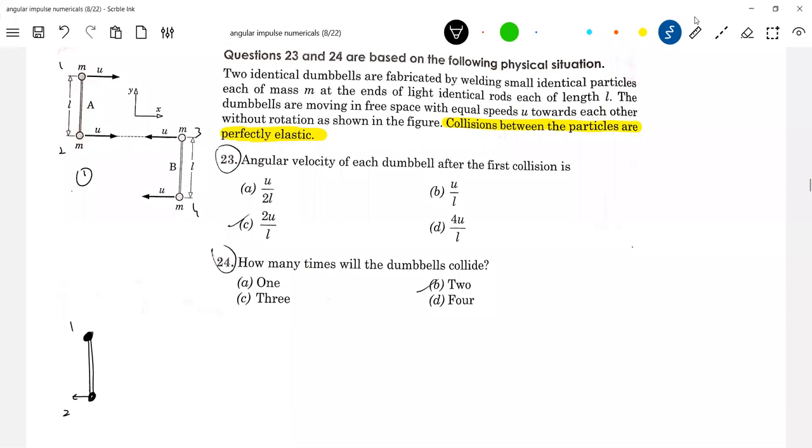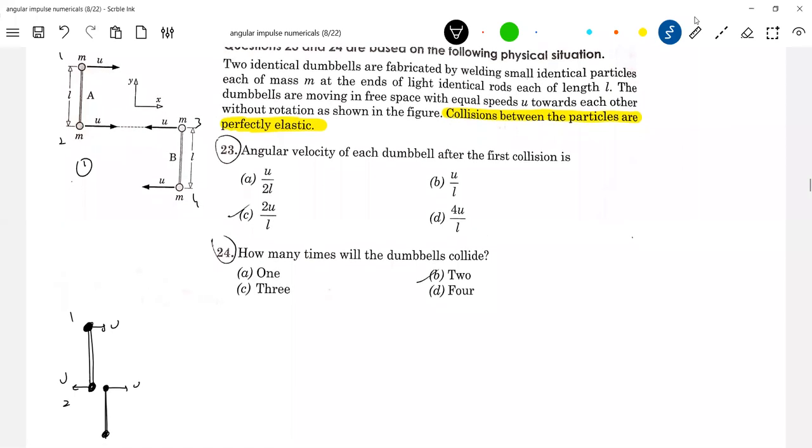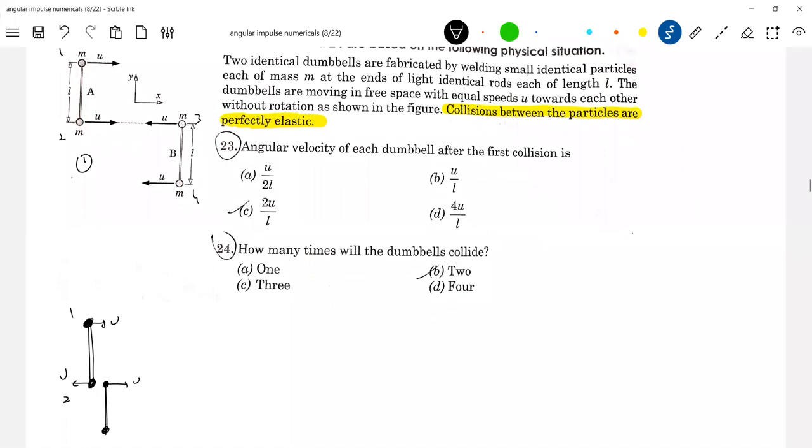After collision, this will have a speed u. This will be speed u. And what about this? This will have speed u. So the speed of the particle 1 and 4 will not change. It will not change. Why it will change?